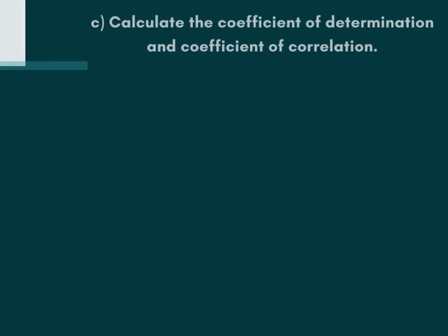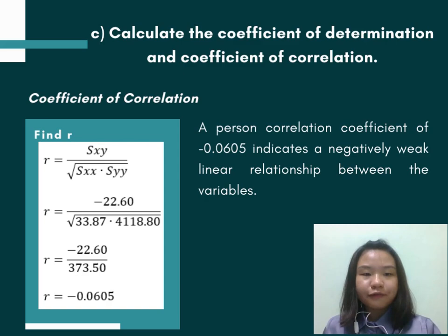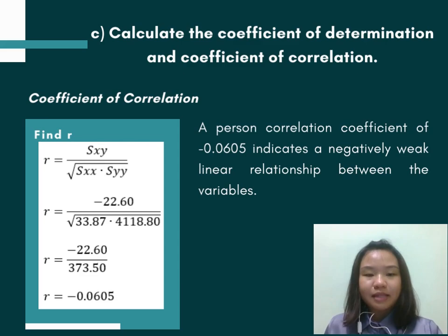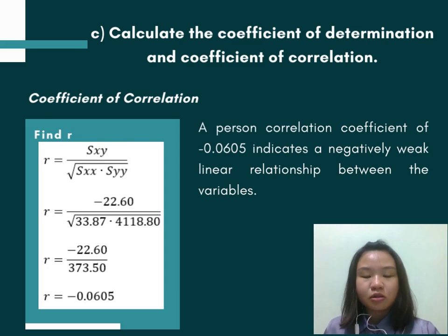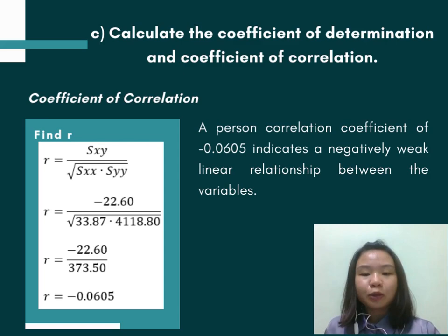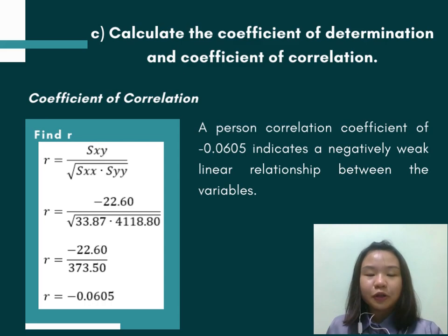Hi, Doctor. My name is Liang Pei Wen, and I will continue to present the part of coefficient of correlation. Step 1: find r. We use the formula r = Sxy / √(Sxx × Syy). So r = negative 22.60 / √(33.87 × 4,118.80) = negative 22.60 / 373.50 = negative 0.0605. A correlation coefficient of negative 0.0605 indicates a negatively weak linear relationship between the variables, because r is between 0 and negative 0.5. The correlation between the variables is negatively weak. There is no correlation between the variables if r = 0. That's all from our group. Thank you.